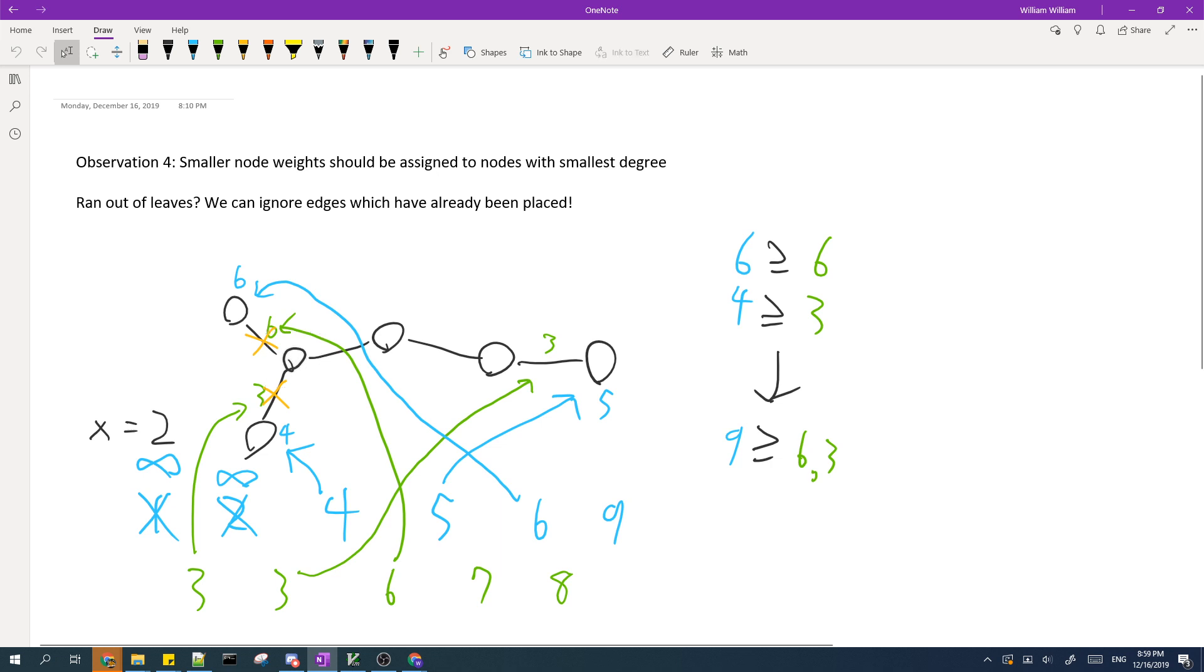We can do that since we know that 9 has a greater weight than these two nodes, 6 and 4. And we know that 6 and 4 are greater than the corresponding edges, 6 and 3. So we know that when we place a 9 over here, the 9 will be greater than 6 and 3. So it won't be a problem.